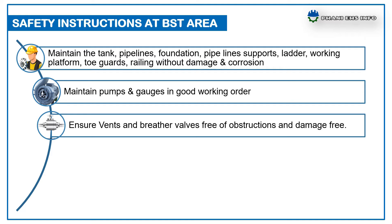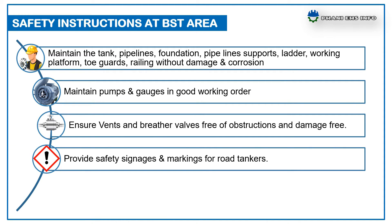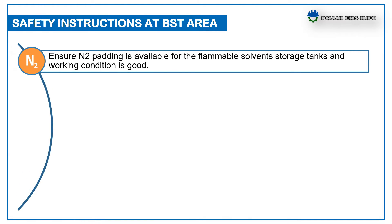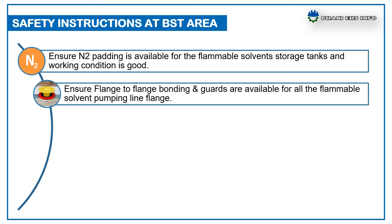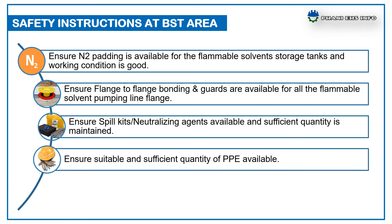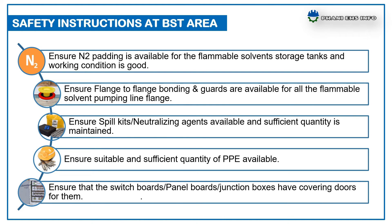Provide safety signages and markings for road tankers. Ensure the level protection instruments like HLS and LLS are available and in good condition. Ensure N2 padding is available for flammable solvents storage tanks and working condition is good. Ensure flange-to-flange bonding and guards are available for all flammable solvents pumping lines and flanges. Ensure spill kits and neutralizing agents are available and sufficient quantity is maintained. Ensure suitable and sufficient quantity of PPE is available. Ensure that the switchboards, panel boards, and junction boxes have covering doors.